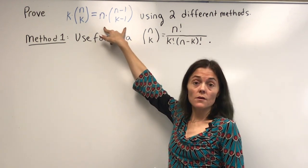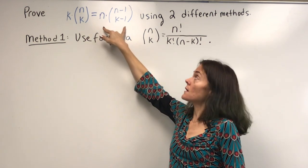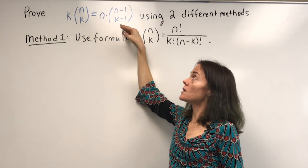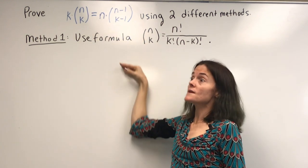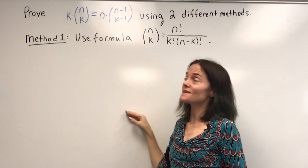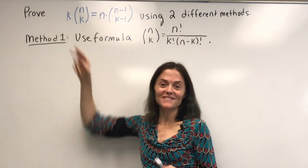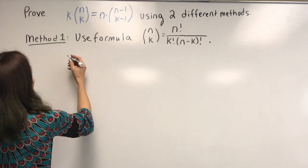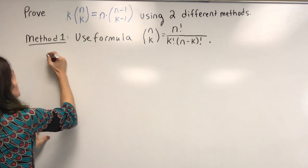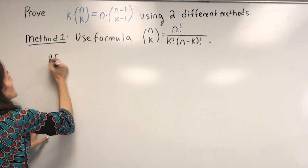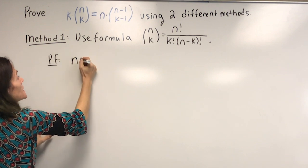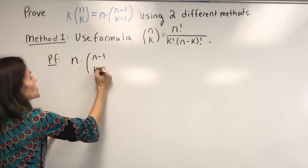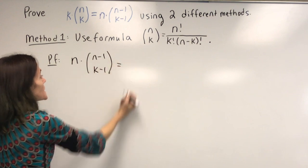I'm going to choose the right-hand side — it will be a little easier for me — and then have a series of equals and then arrive at the left-hand side. So the proof: the right-hand side, n times n minus 1 choose k minus 1, is equal to...